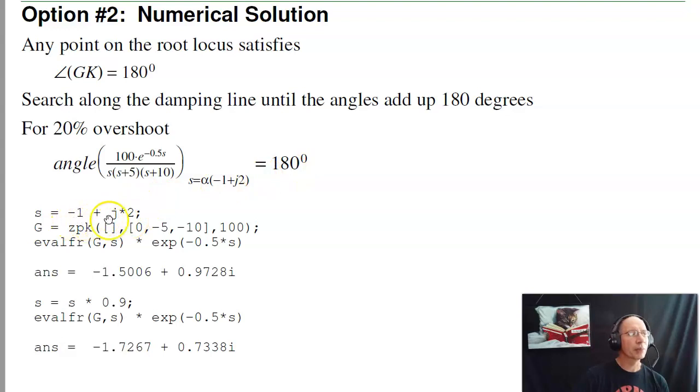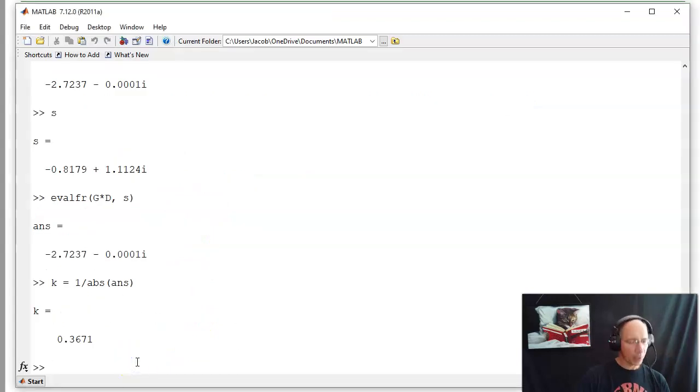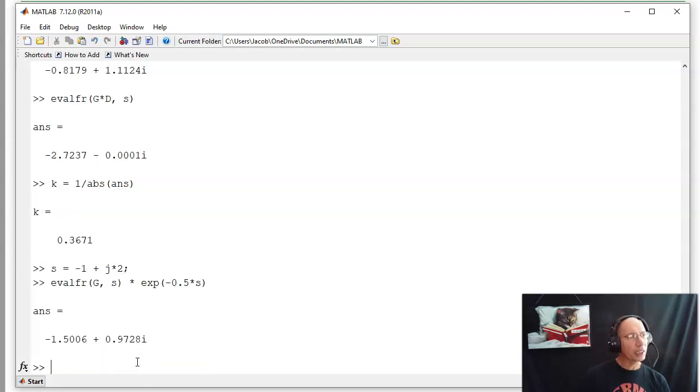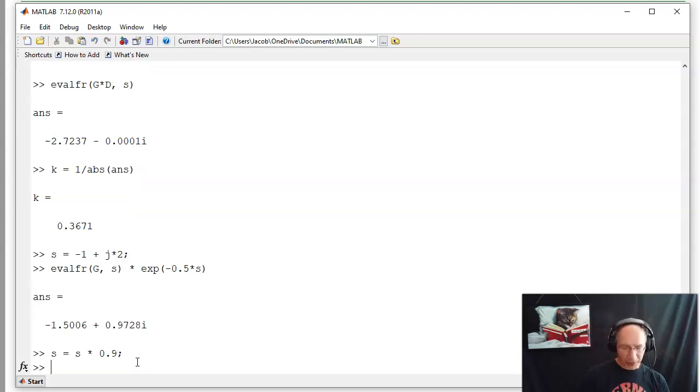I'm going to guess s is minus 1 plus j2. Here's g of s. Evaluate g of s times e to the minus 0.5s, and you get a complex number. The angle of the complex part should be zero. It's not, so this point's not on the root locus. Let's iterate. Make s 10% smaller. I set the angle with a 2 to 1 ratio that gives me 20% overshoot. Evaluate g of s at that point times the delay. Make s 10% smaller and try again.